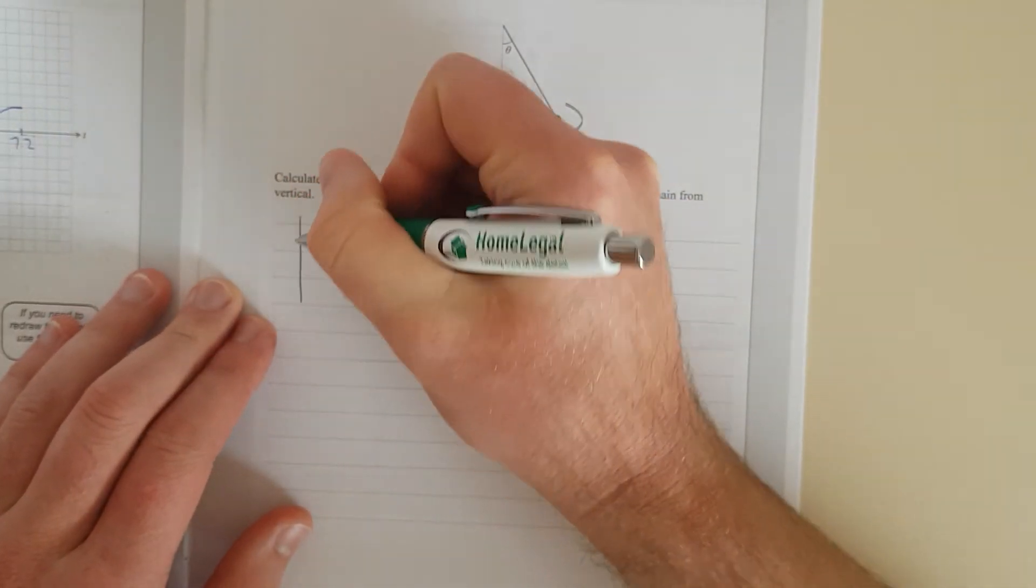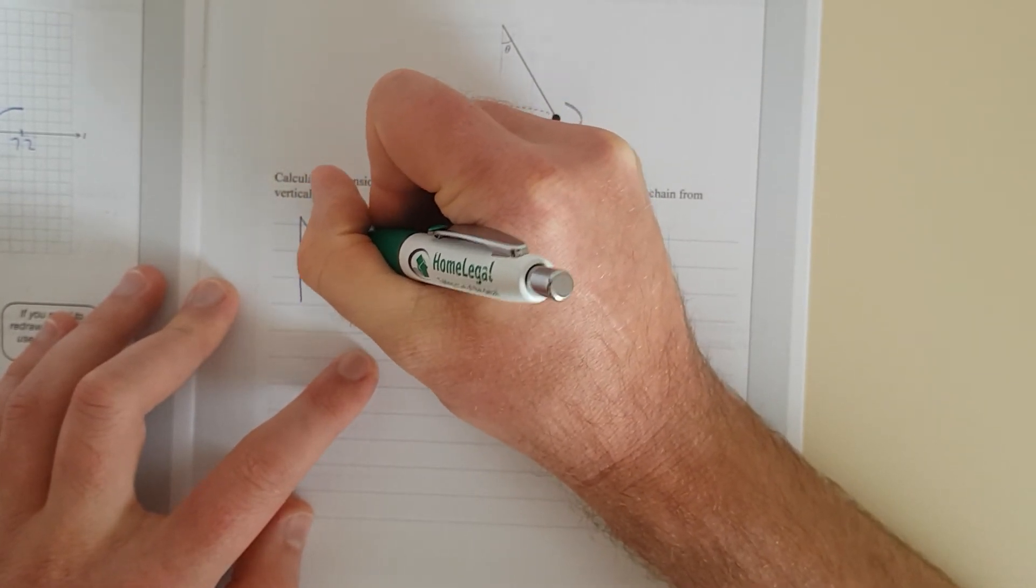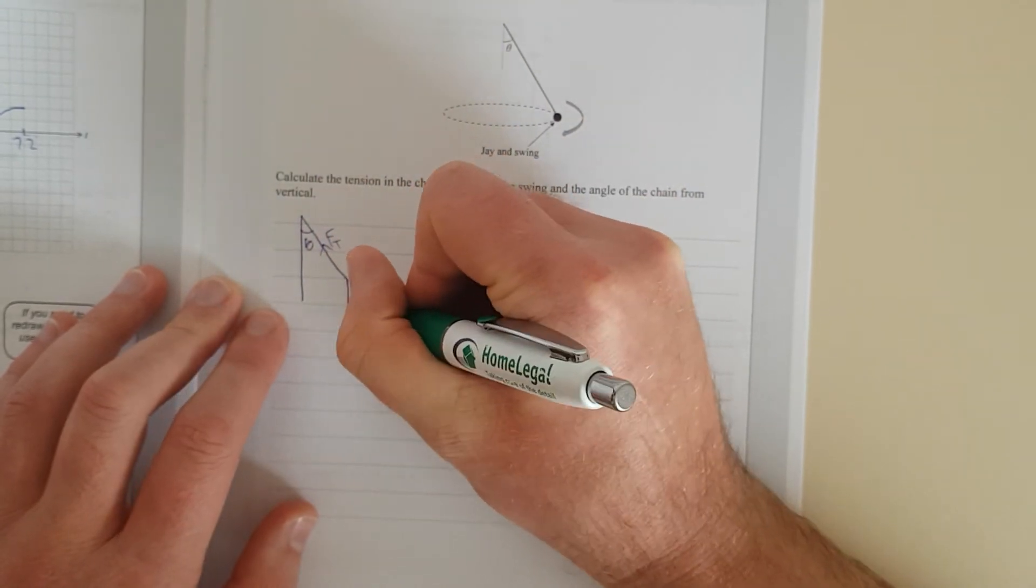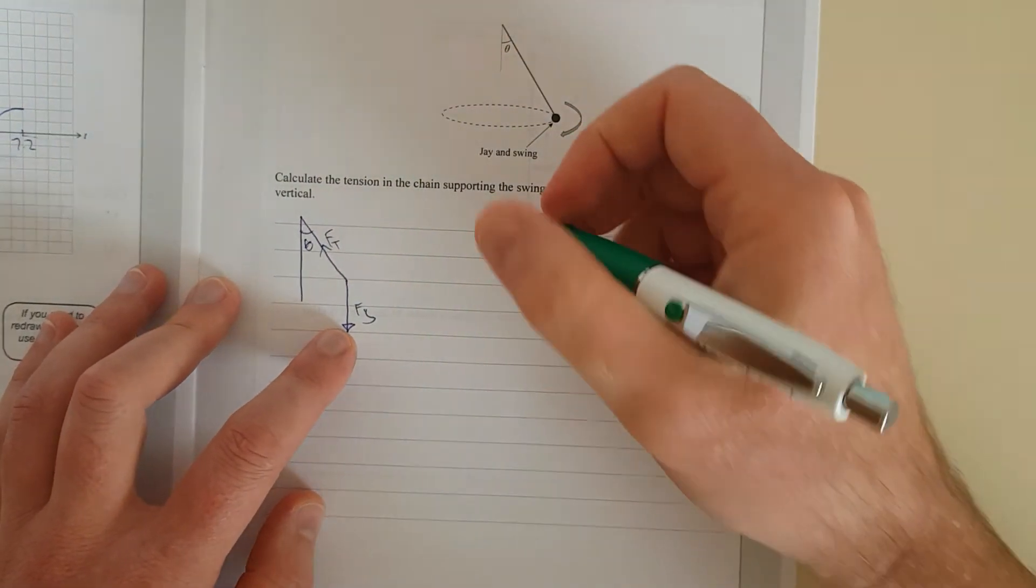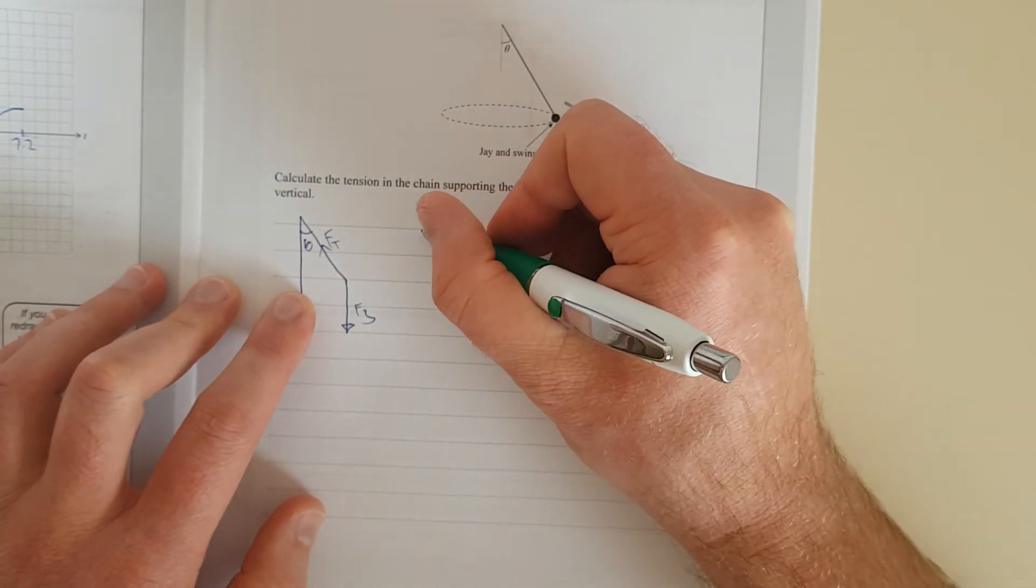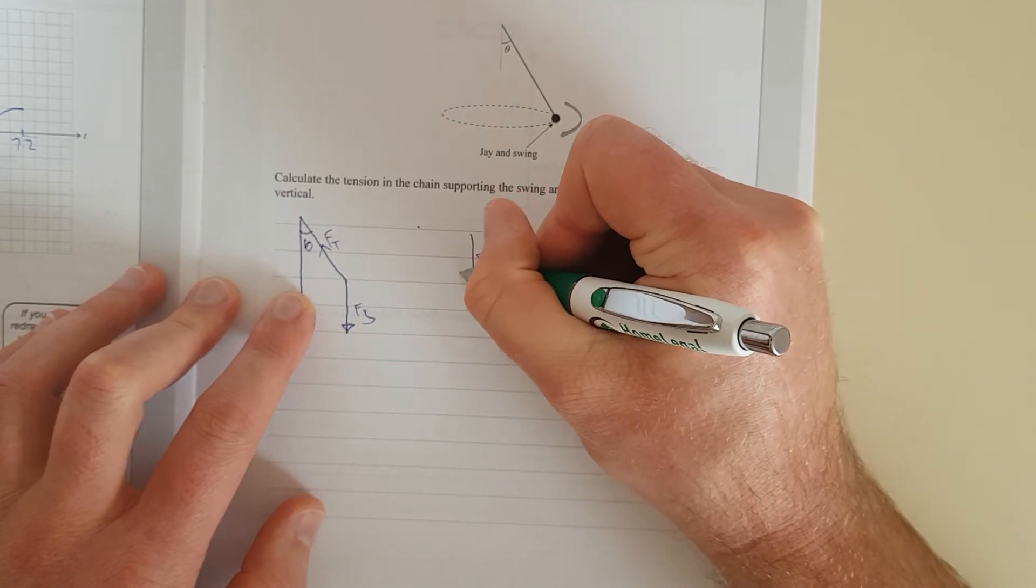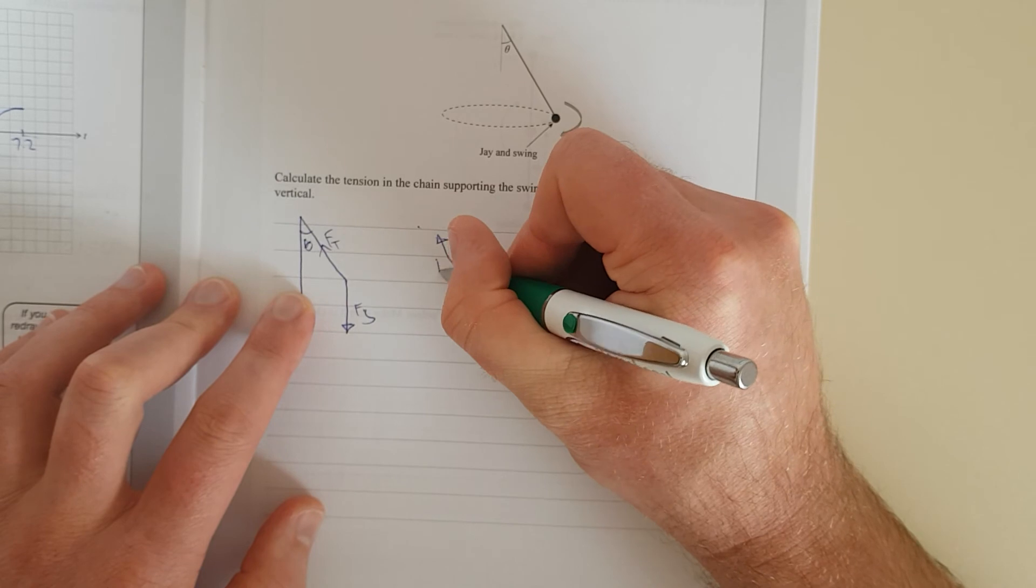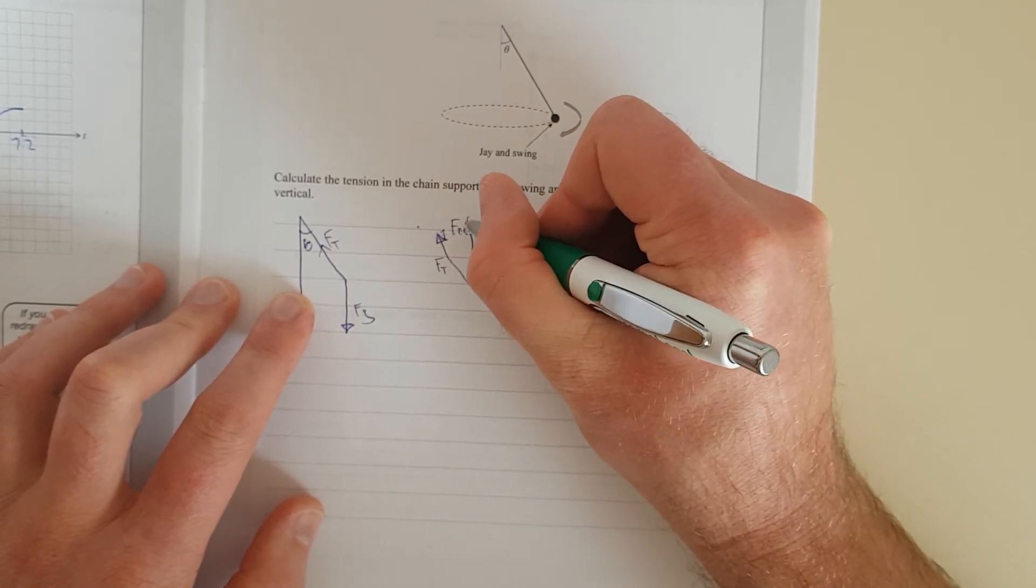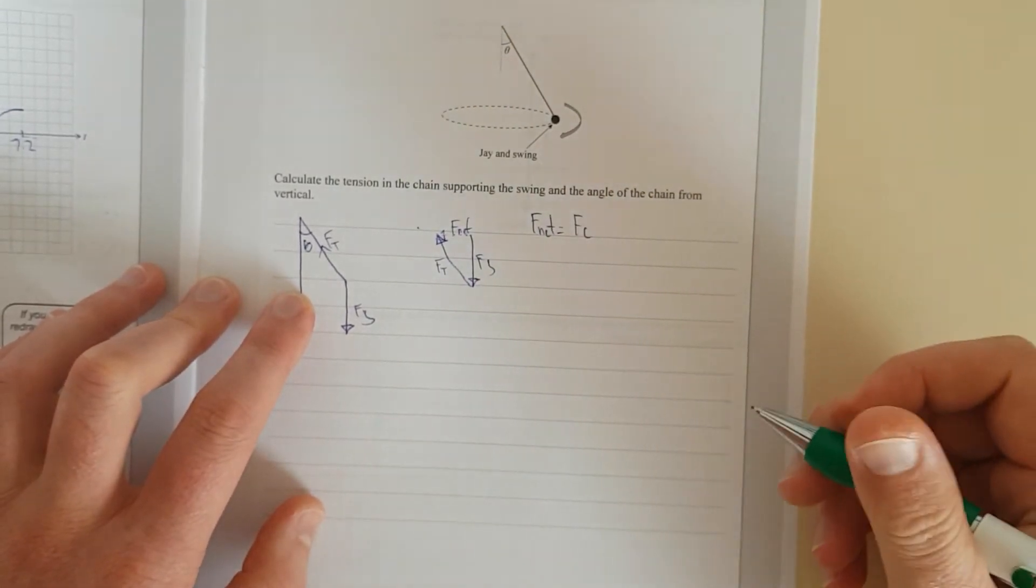We have the center. We have Ft pointing up. We have theta here. And we have Fg pointing down. And we know it's going on a circle. So these here must add to a center pointing force. So we're going to have I'm going to go down Fg. I'm going to go up the tension force Ft. And this must equal net force. I'm going to just call this F net. And then over here I'm going to go F net equals Fc. Because it's the center pointing force.